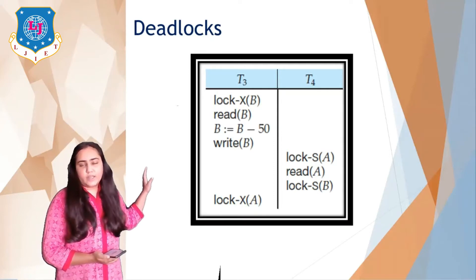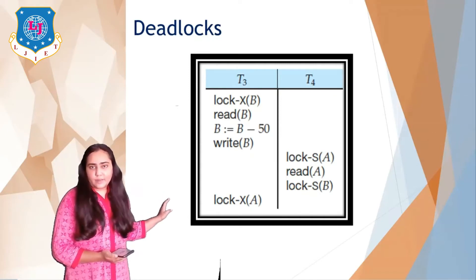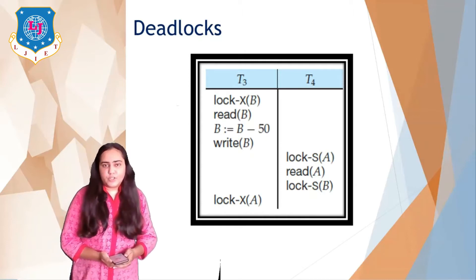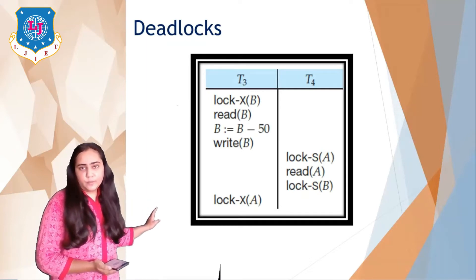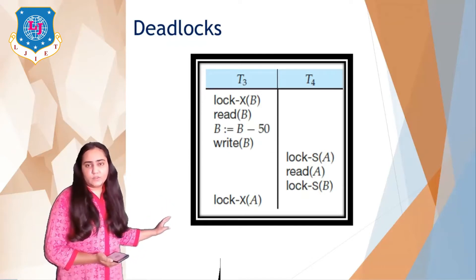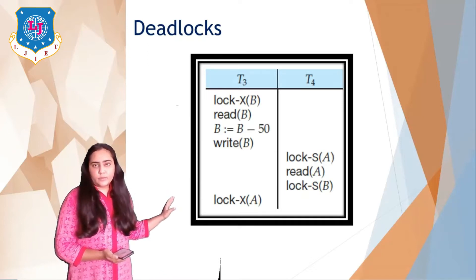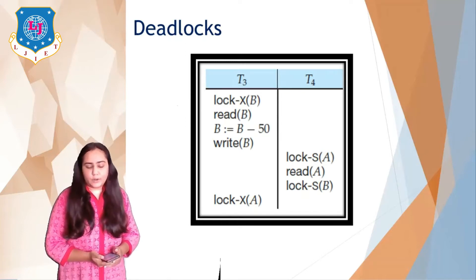T3 is holding an exclusive lock on B and T4 is holding a shared lock on A. Now T4 is asking for a shared lock on B, and T3 is trying to ask for an exclusive lock on A. This is not possible because T4 is having a shared lock on A and hence T3 cannot have an exclusive lock on A since they are not compatible. And T4 wants a shared lock on B which is also not possible because T3 is already holding an exclusive lock on B — so those two are not compatible either.